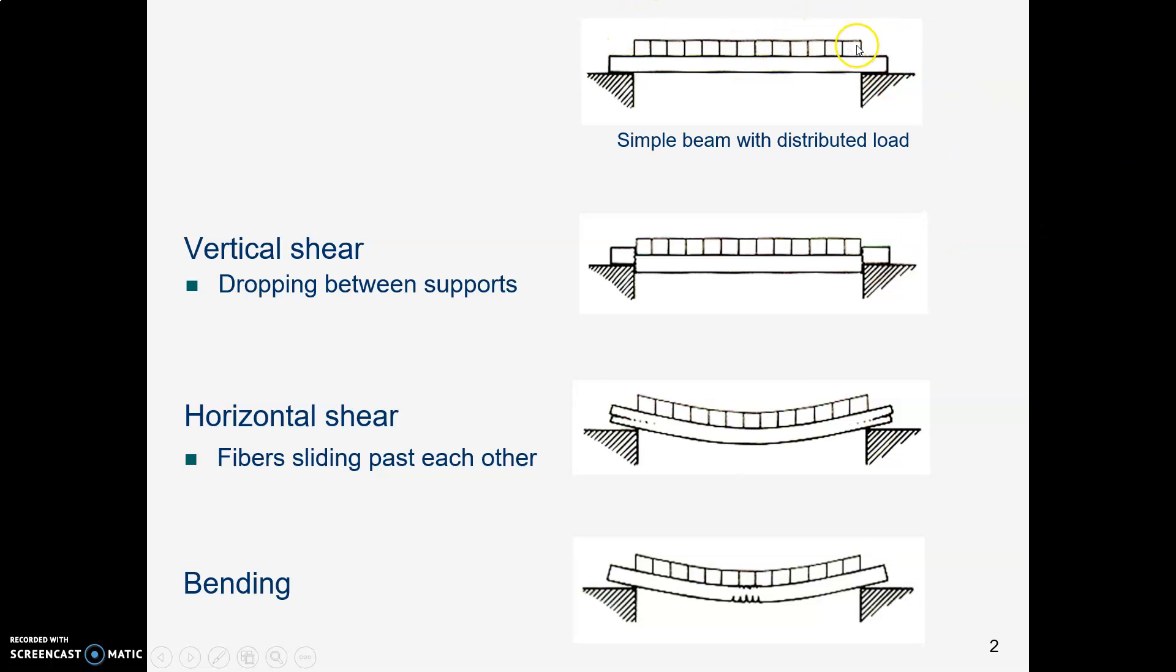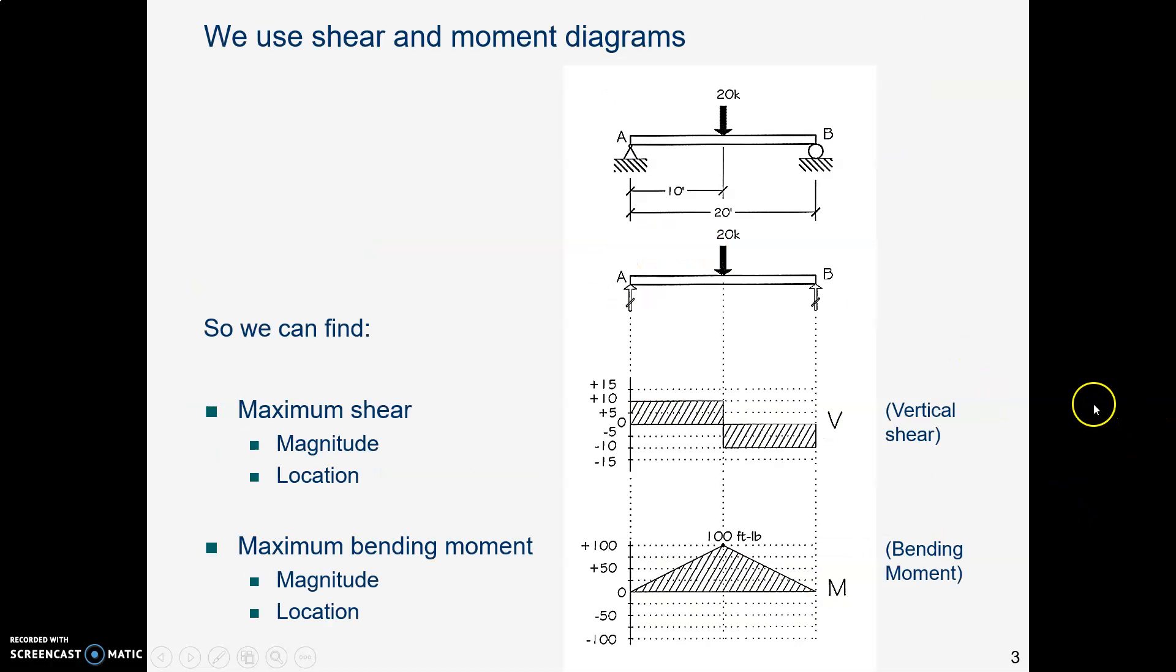Here's a simple beam with a distributed load, and vertical shear is represented by this second picture. Horizontal shear is where the thing might bend, and you'd have fibers sliding past each other like in a wood beam, and then here's bending. We're most concerned about vertical shear, and even more about bending.